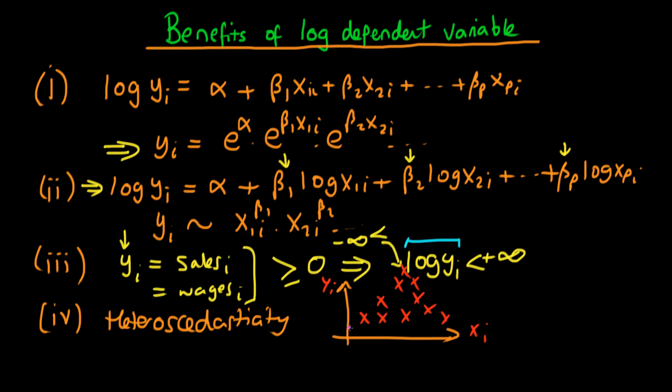and that will be reflected in my sort of distance of my points away from my fitted line. Well essentially what the log transform does is it suppresses variation because the log function itself has a decreasing marginal returns to xi.